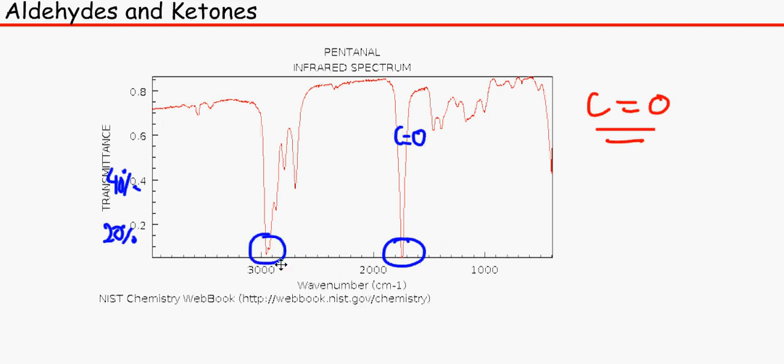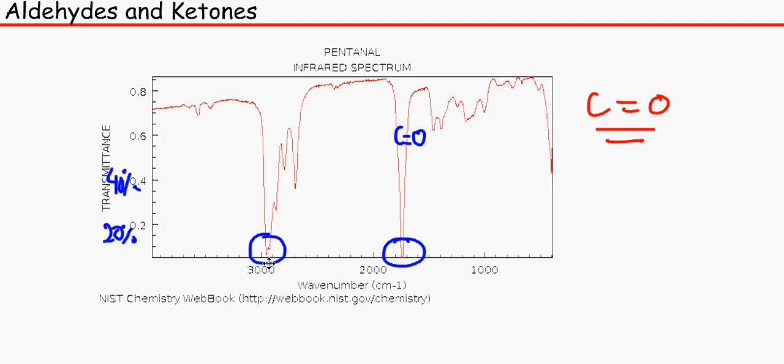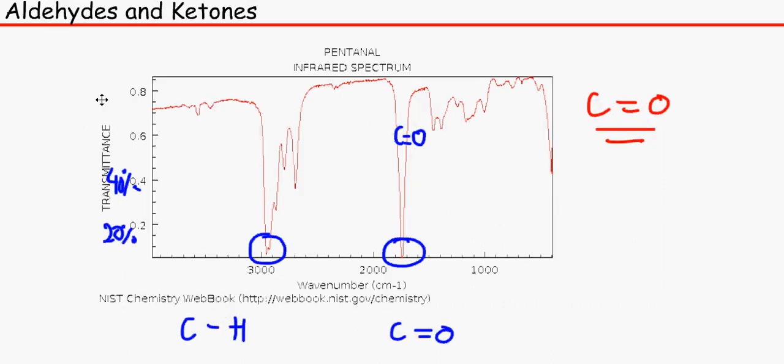This one is also a key peak. This is a C to H bond over here from 2850 to 3100. We know it's got C to H bonds. Organic chemicals always have C to H bonds, but it's also got a C to O bond. Since it doesn't have this O to H bond here, we know that it's not a carboxylic acid but it's an aldehyde or a ketone. Aldehydes would usually have the O here, and ketones would usually have the O in the middle.